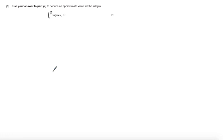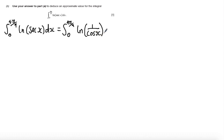Part B says: use the answer from part A to deduce an approximate value for the integral of log(sec x). This is about manipulating the integral using identities from C3. Log(sec x) dx equals the integral of log(1/cos x) dx, which equals the integral of log(cos x)^(-1) dx.